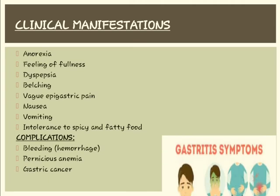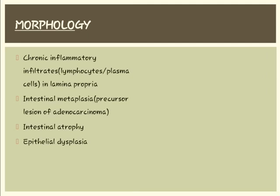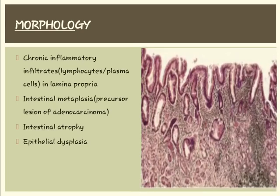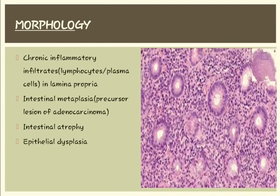Clinical manifestations of chronic gastritis include anorexia, feeling of fullness, dyspepsia, belching, vague epigastric pain, nausea, vomiting, and intolerance to spicy and fatty food. Complications may include bleeding (hemorrhage) and pernicious anemia. Morphologically, chronic inflammatory infiltrates including lymphocytes or plasma cells are present in the lamina propria. Intestinal metaplasia can occur and is a precursor lesion for adenocarcinoma. Intestinal atrophy and epithelial dysplasia may also occur.